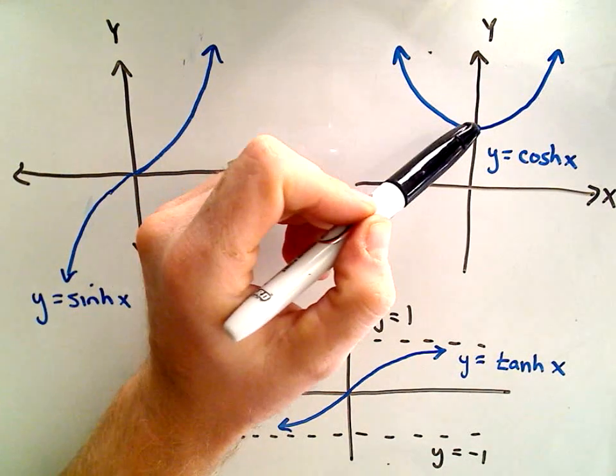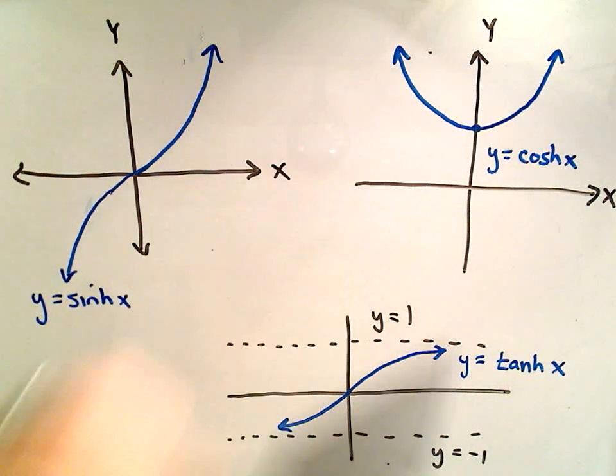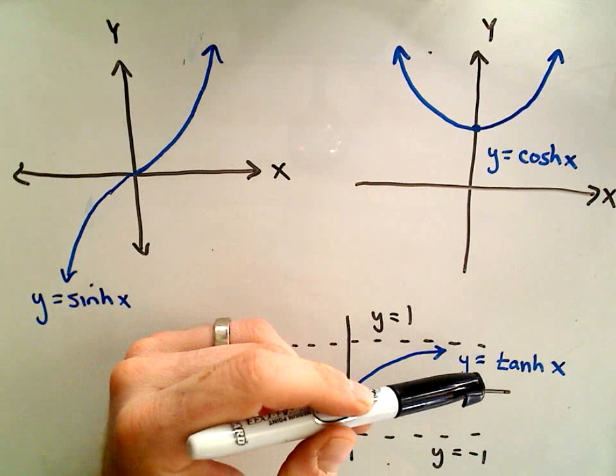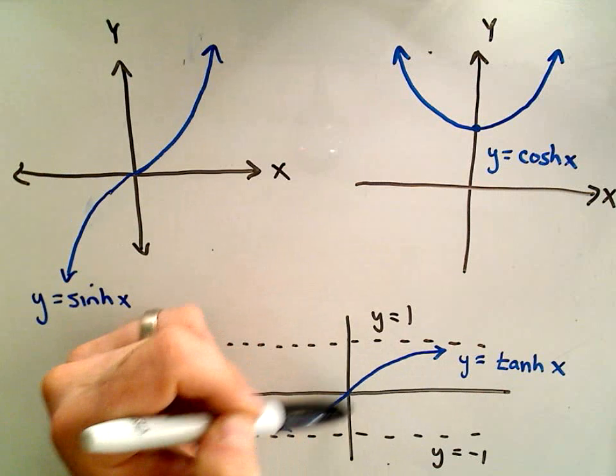Hyperbolic cosine kind of looks like a parabola that's been moved up a little bit. Again, it's not a parabola. And hyperbolic tangent, if you've seen the graph of inverse tangent, it looks almost like that.